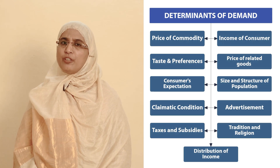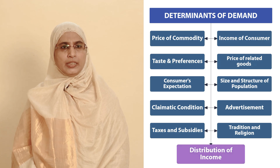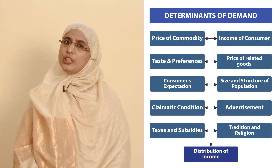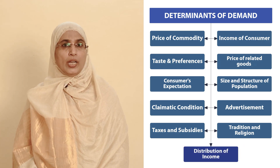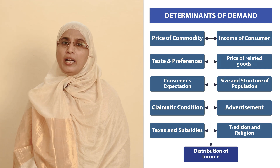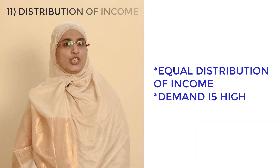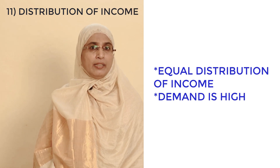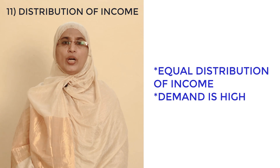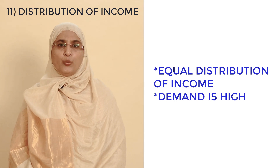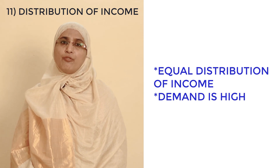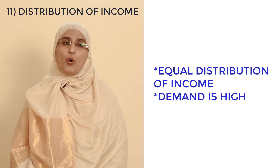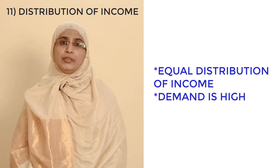Another determinant is distribution of income. If distribution of income is equal, the demand will be high. If there is unequal distribution of income, demand will be low. Take the example of Japan — Japan is the number one country in the world where distribution of income and wealth is most equal.